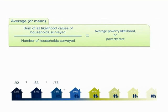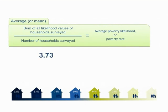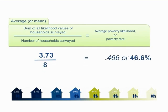So, to find the rate of poverty in a group of households that you've surveyed with the PPI, add all likelihood values together and divide that number by the number of households you surveyed. That number is the percent of households in that group that live below the poverty line.